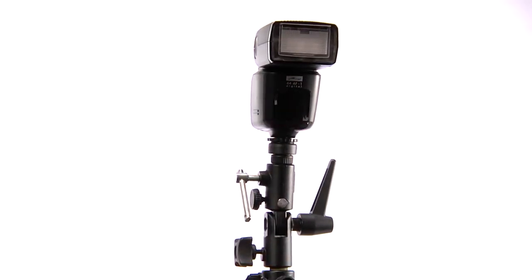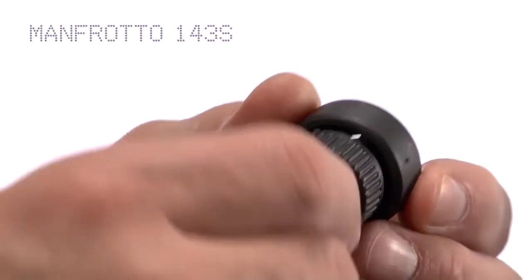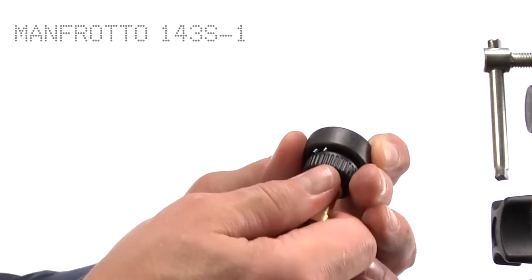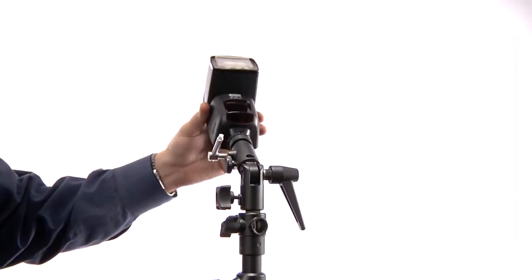If you are using a shoe mount unit, you will need to add the optional cold shoe adapter 143S or 143S-1. The built-in swivel feature lets you change the angle of light easily.